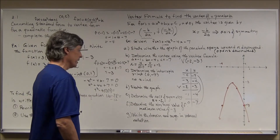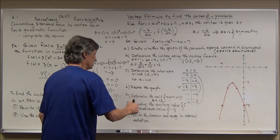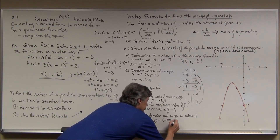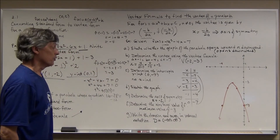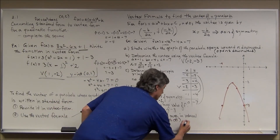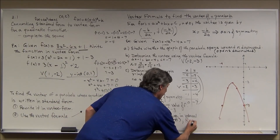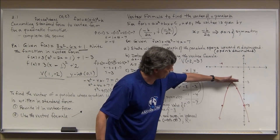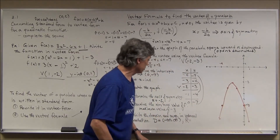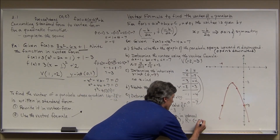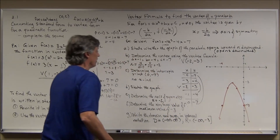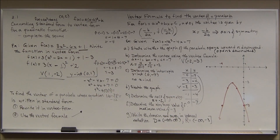Finally, the domain and range. For quadratic functions the domain is always (-∞, ∞). The range is determined from the sketch: since there's a maximum value of -3 and all other y-values are below it, the range is (-∞, -3]. We include -3 because the vertex y-value is part of the range.